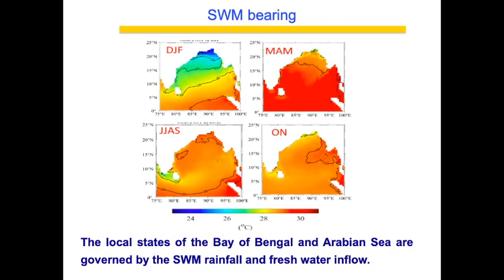Depending on the rain that occurs during Southwest monsoon, there is a bearing on whether Northeast monsoon will perform well or not — this is my personal opinion based on analysis and research. There is fresh water influx from tributaries like the Indus, Brahmaputra, and Ganges, and that water moves along the coast. During December, the basin is generally colder. More Southwest monsoon rains means more water flux from these rivers, cooling the Bay of Bengal.